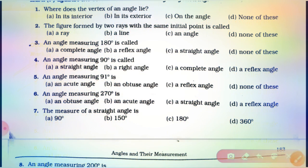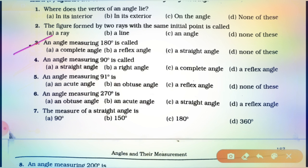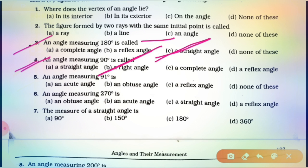In question number 3, students observe: an angle measuring 180 degrees is called a straight angle. Clear, students? Now, proceed to the fourth question. An angle measuring 90 degrees — an angle whose measurement is 90 degrees is known as a right angle.